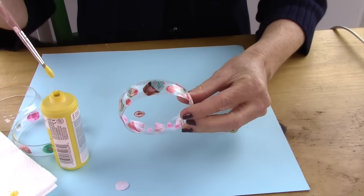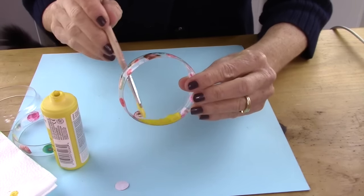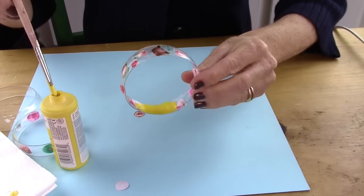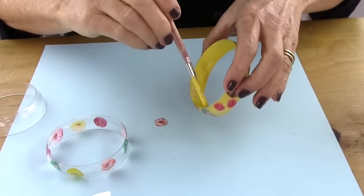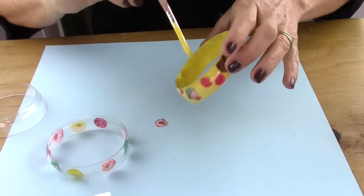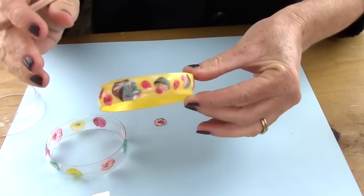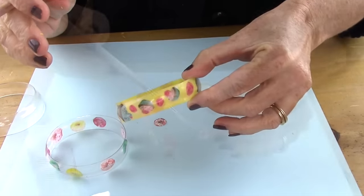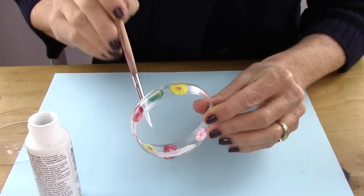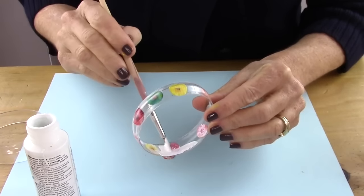After you've decorated each of your bracelets, like this cupcake one, take some paint and paint the inside. This one has yellow. Make sure the Mod Podge dries completely before you paint the inside. The donut one, I decided to paint white.